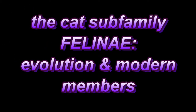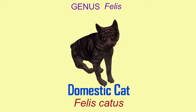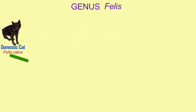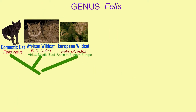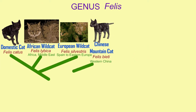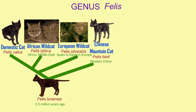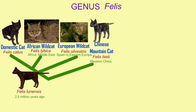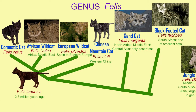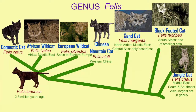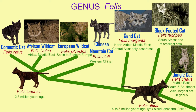The genus Felis consists of the domestic cat and its closest relatives: the African wildcat, European wildcat, and Chinese mountain cat, and then more distantly related sand cats, black-footed cats, and jungle cats.